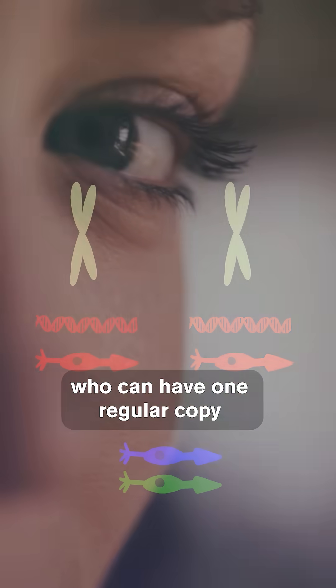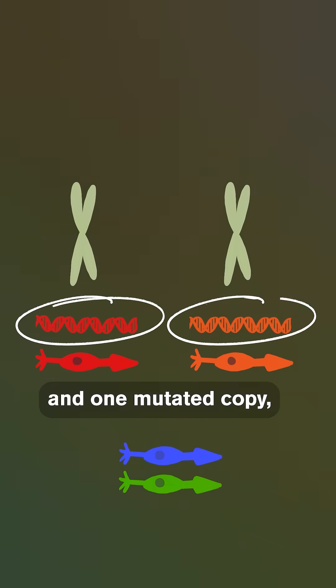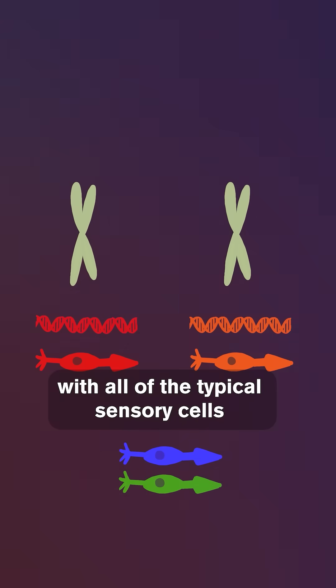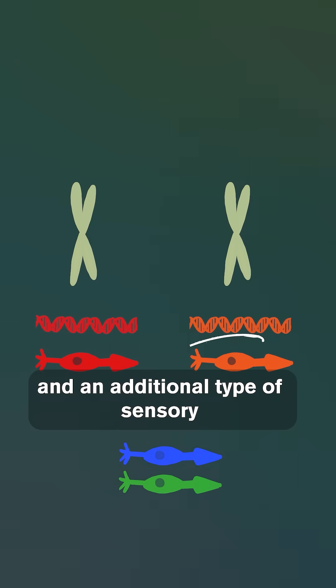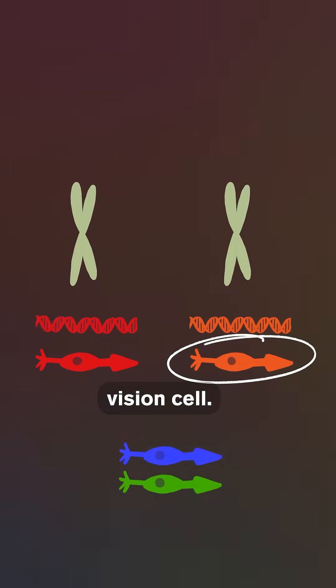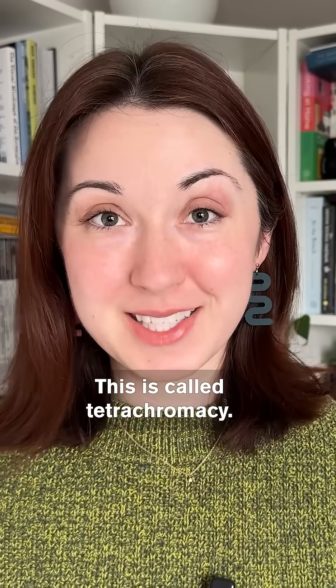But for humans with XX chromosomes who can have one regular copy and one mutated copy, they can end up with all of the typical sensory cells and an additional type of sensory vision cell. This is called tetrachromacy.